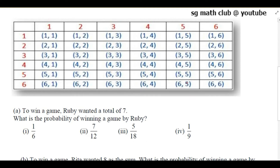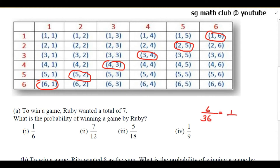5 plus 2 is 7, so that is one possible outcome. Again, 2 plus 5 is 7. Then 3 plus 4 is 7, and 4 plus 3 is 7. Also 1 plus 6 is 7, and 6 plus 1 is 7. So there are 6 favorable outcomes in total, and the total possible outcomes is 36. So 6 by 36 is 1 by 6. The probability of winning the game by Ruby is 1 by 6.